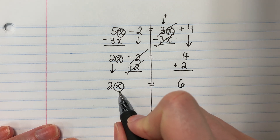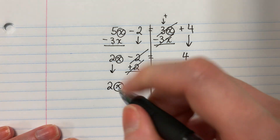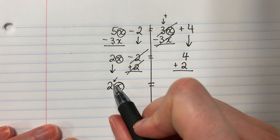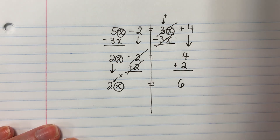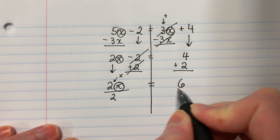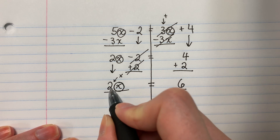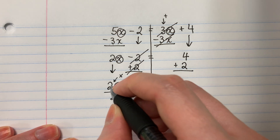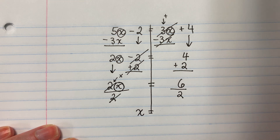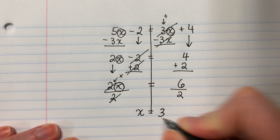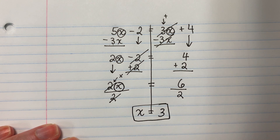I want x alone. Quiero la x sola. I have 2 with x — tengo 2 con x. They are touching — están tocando. There's no sign in the middle — no hay señal en el medio — so that is multiply. Es multiplicación. The opposite of multiply is divide. El opuesto de multiplicación es división. So divide — what number is with x? ¿Cuál número está con x? 2. Divide by 2. 2 divide 2 is 1, cancel. 2 entre 2 es 1, se cancelan. x equals 6 divided by 2 — 6 entre 2 — half of 6 — la mitad de 6 — 3. This is my answer because the x is alone. Esta es mi respuesta porque la x está sola. Thank you.